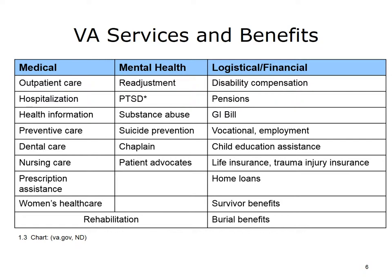Mental health services address problems of readjustment to civilian life, post-traumatic stress disorder, substance abuse, and suicide prevention. Veterans have access to a chaplain for their spiritual needs. Patient advocates are available at every VA medical center to answer questions or help veterans deal with any problems or special needs. Rehabilitation is available for psychological as well as physical trauma. Logistical and financial benefits include disability compensation, pensions, and the GI Bill, which provides financial aid for college education. Also available are vocational rehabilitation, assistance with employment, educational assistance for veterans' children, life insurance, traumatic injury insurance, home loans, benefits for survivors of deceased veterans, and assistance with burials.